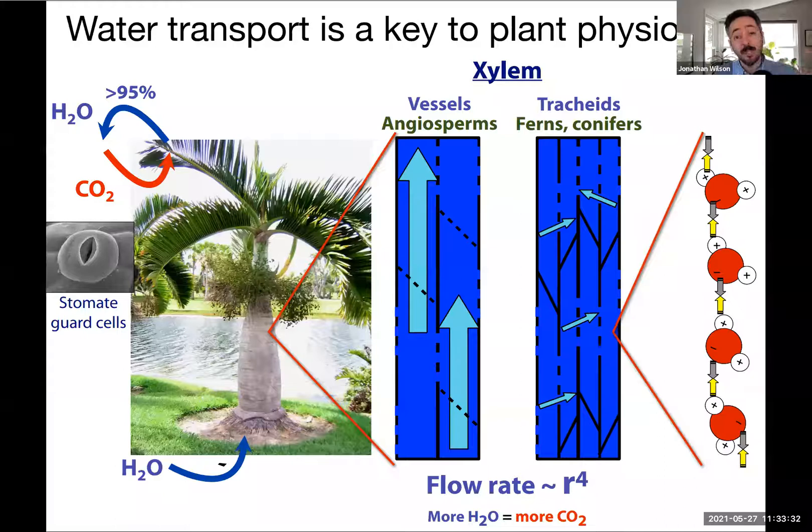All else being equal, more water that can be supplied to the leaves can yield more carbon dioxide uptake and more photosynthesis. And this is a passive process — plants aren't expending energy to do this, but it comes at a cost.